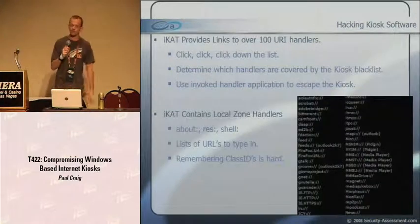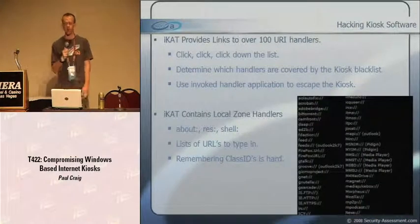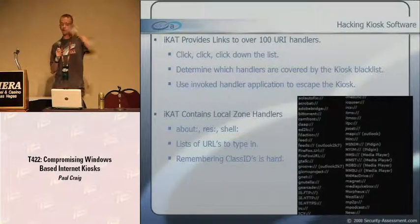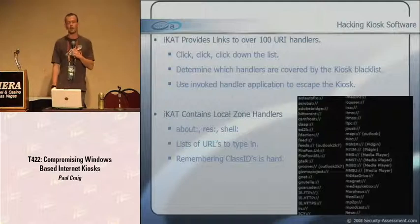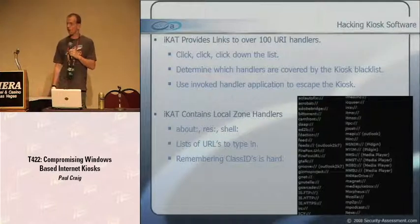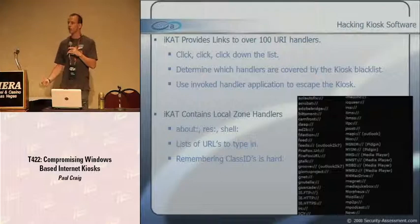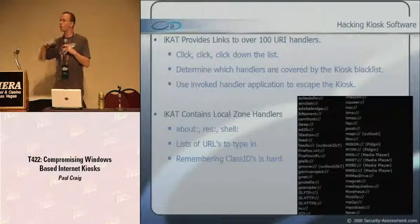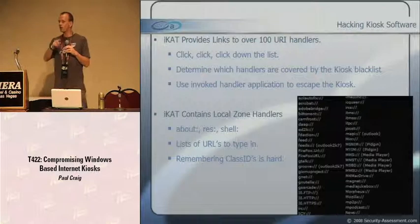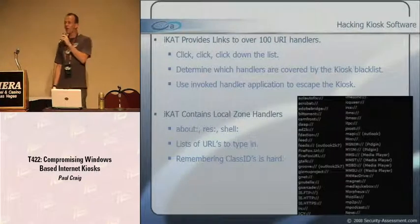iKAT provides links to over 100 different URI handlers. You can quickly click down the list and see what pops up, determine which handlers are covered by the kiosk blacklist, and use those that aren't to escape the kiosk. I've also implemented automatic execution of URI handlers using DHTML and JavaScript - you click once and all the handlers are sequentially invoked. Stuff just pops up everywhere. You win.